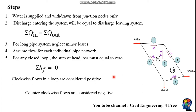First let's see the steps to solve this problem using the Hardy Cross method. Water is supplied and withdrawn from each junction — water can only be supplied and withdrawn from a junction. Discharge entering the system must be equal to discharge leaving the system. For example, if this node receives 63 liters per second, then the discharge leaving must also be 63 liters per second. Since we have a long pipe network, minor losses are neglected.